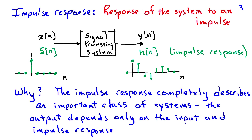Now the impulse response, it turns out, completely describes an important class of systems. And what I mean by completely describes is that you can determine the output for such a system, given only the input and the impulse response.